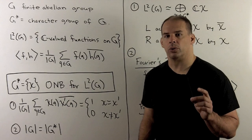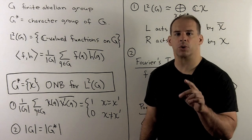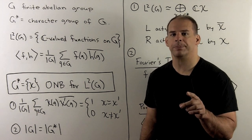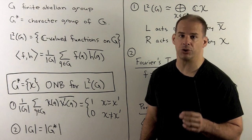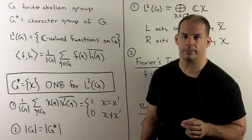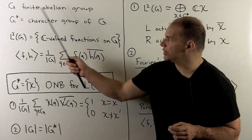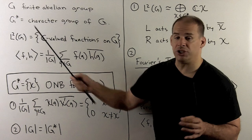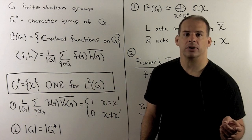We continue with finite abelian groups. We explore consequences of orthogonality of characters, and we formalize things using Fourier transforms. G is a finite abelian group. We have G-star, the character group of G.